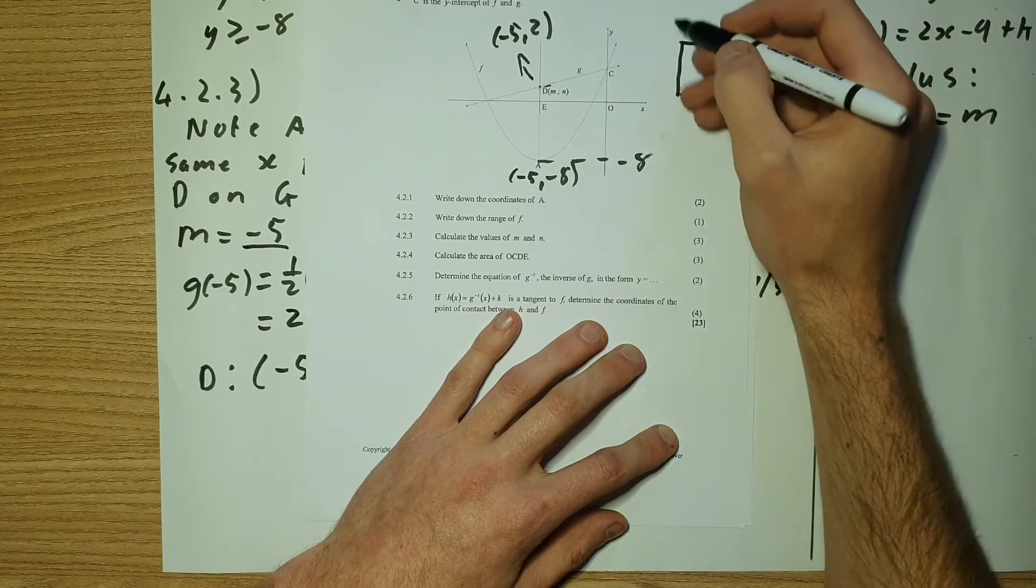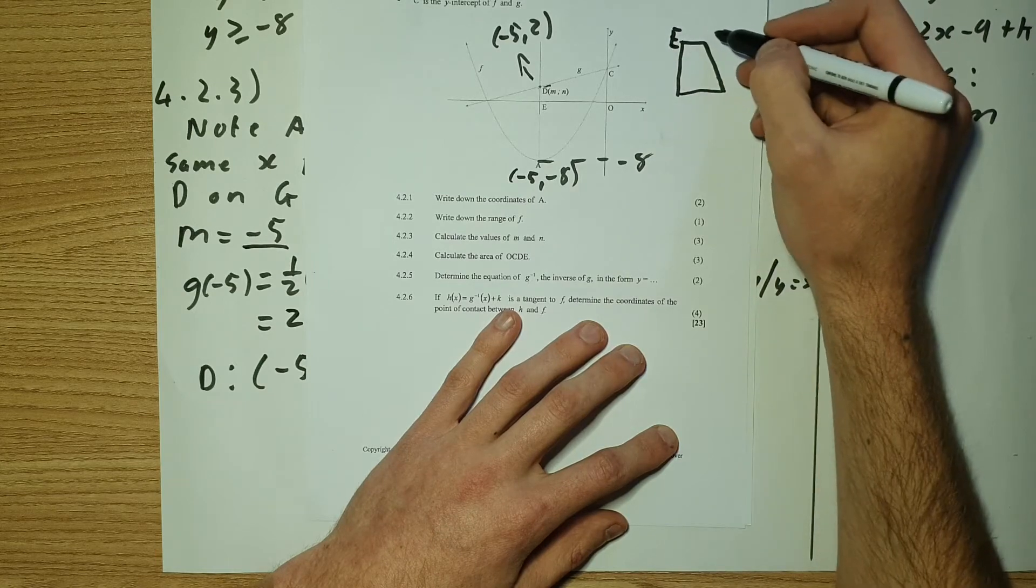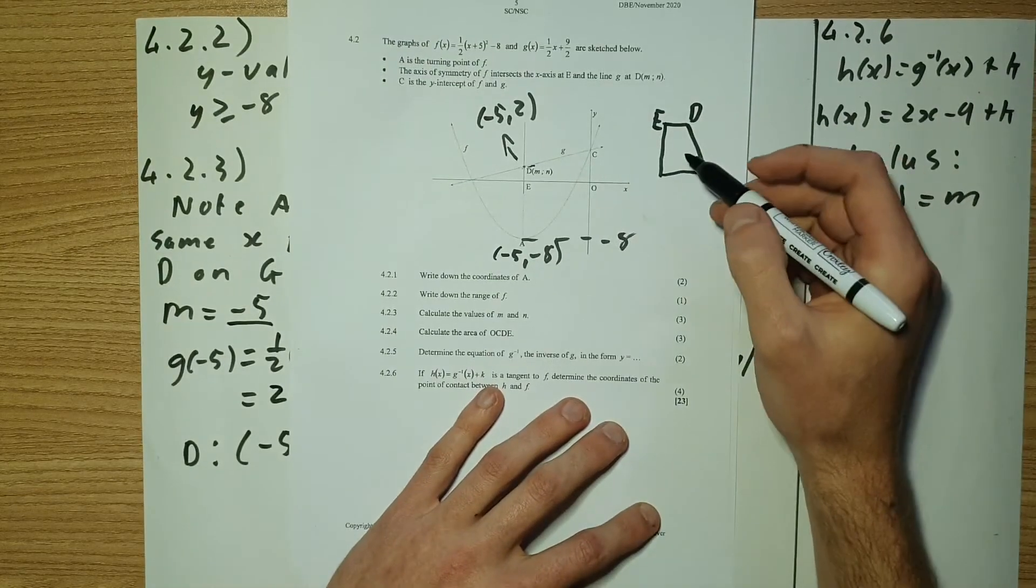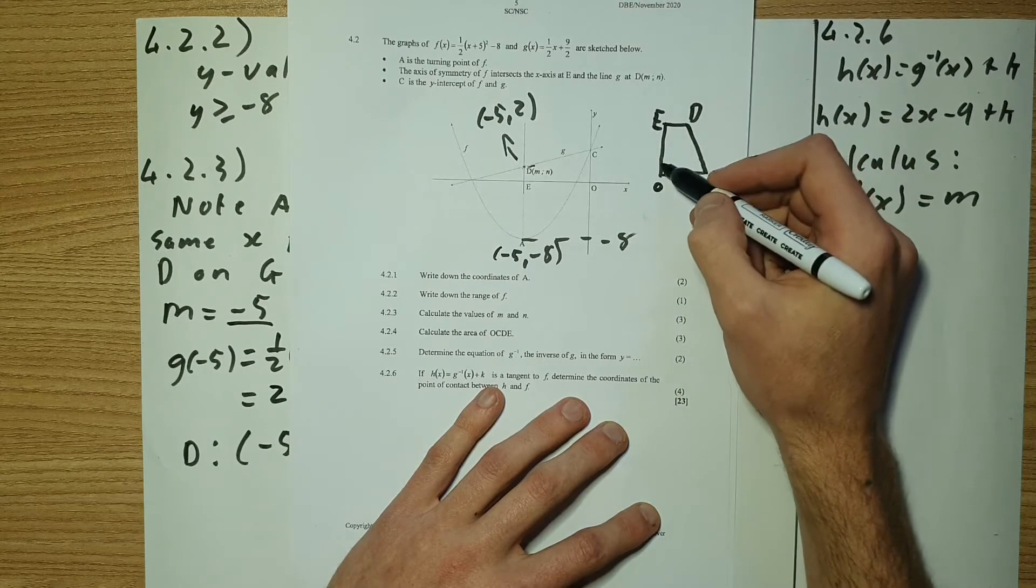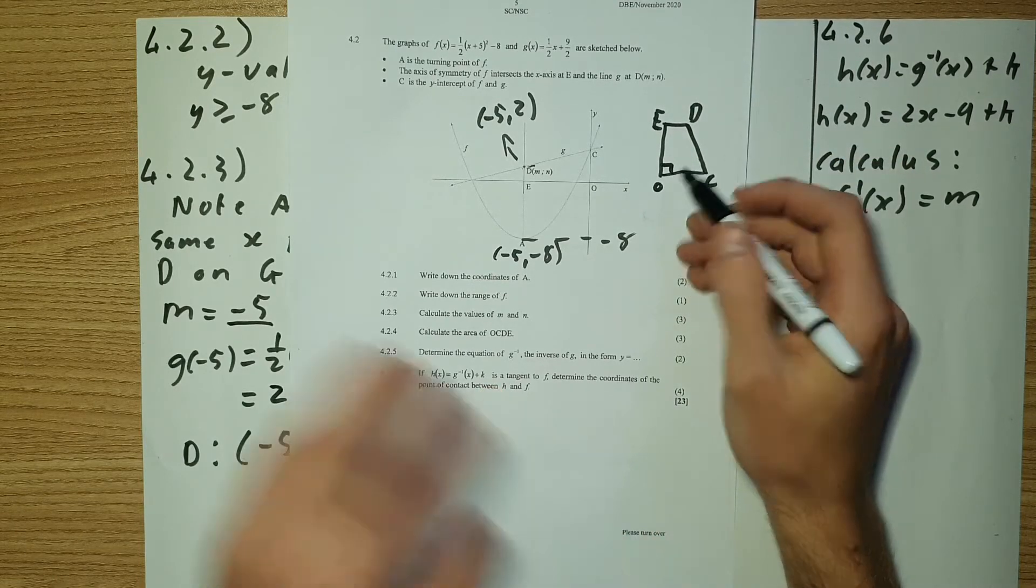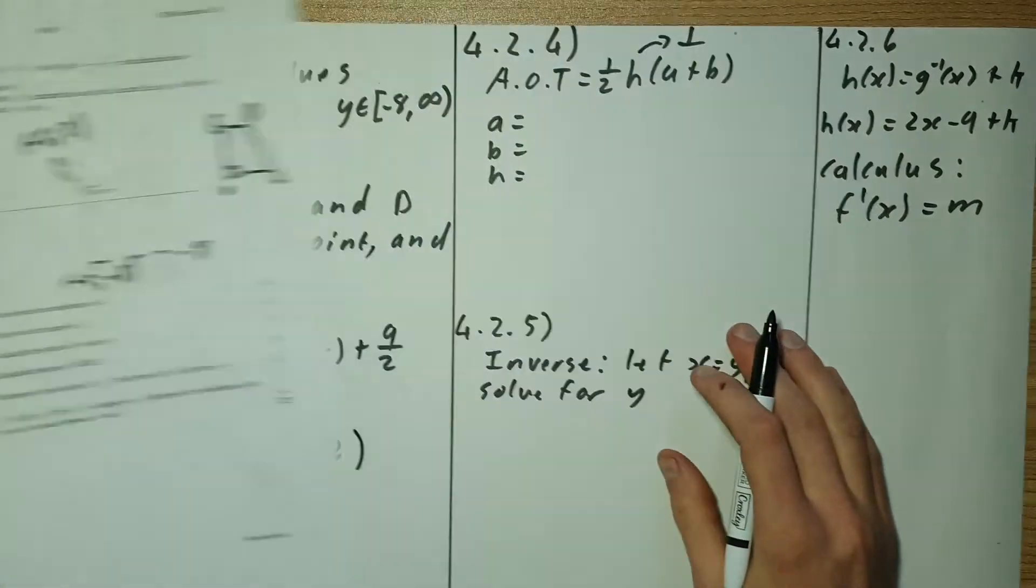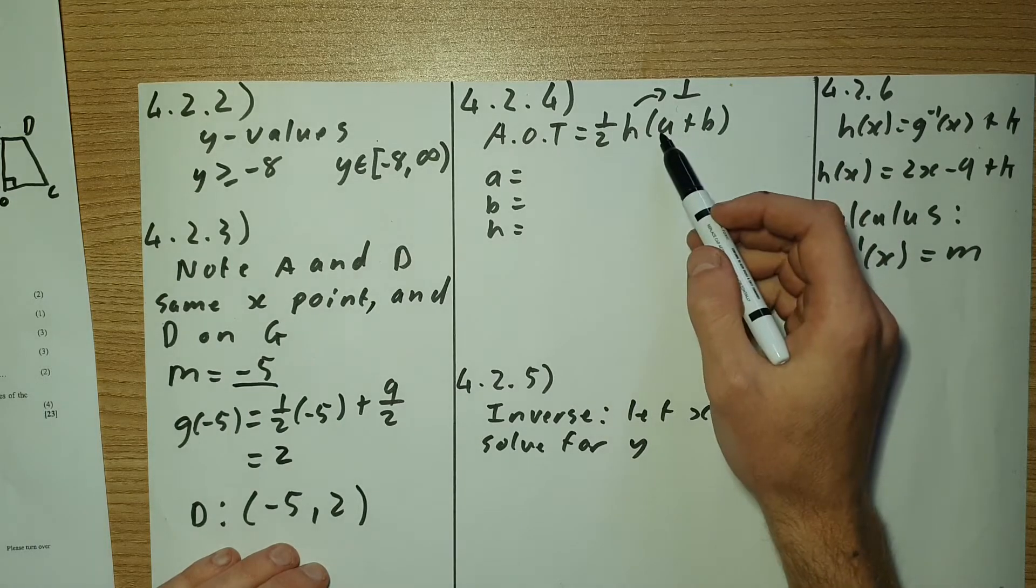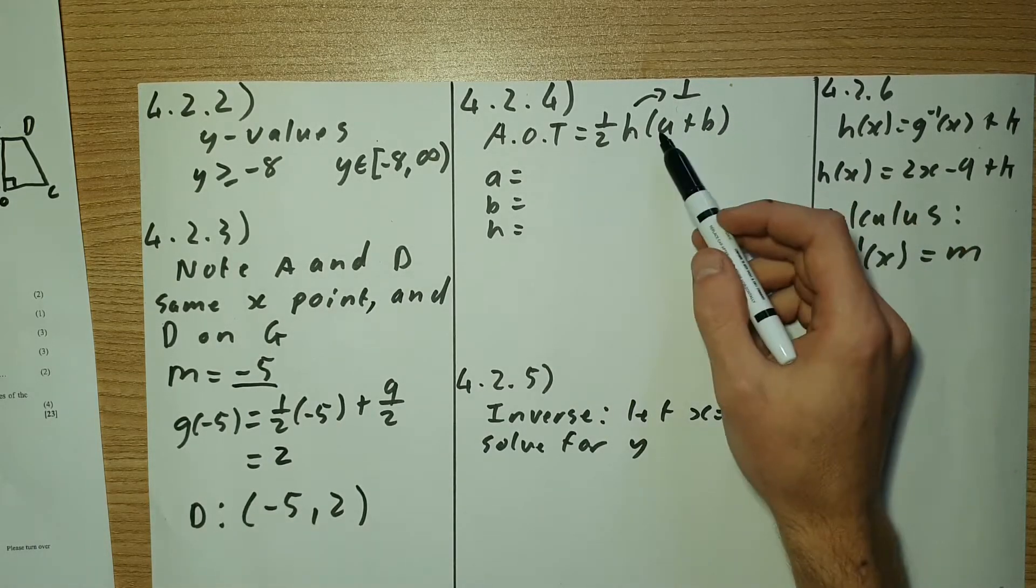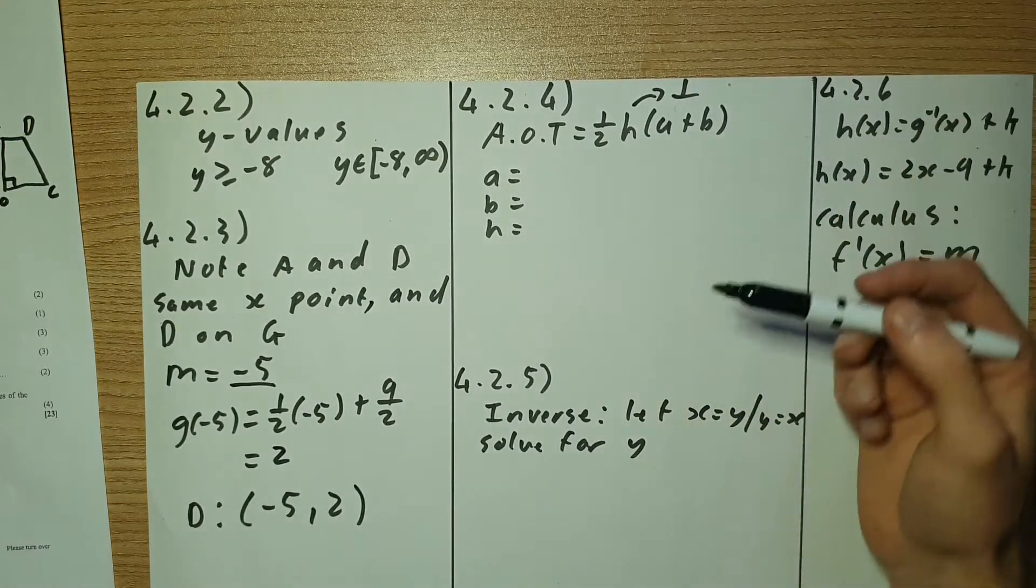So I'm just going to draw it upright. So it's going to look something like this. So that is E. That is D. This one is O. And that is C. So here is my perpendicular. Now, remember the formula of a trapezium for the area is half my perpendicular height multiplied by A plus B where A and B is the top and the bottom.